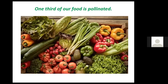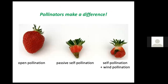One third of our food is pollinated as well. Pollinators make a huge difference. The strawberry in the middle received no pollen from any other flower. The one on the right got some wind-borne pollen, but only through open pollination — where pollinators actually visited the flower and brought enough pollen — was the plant able to make a large fruit.